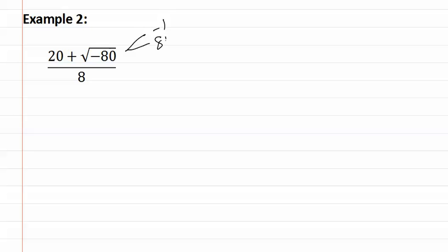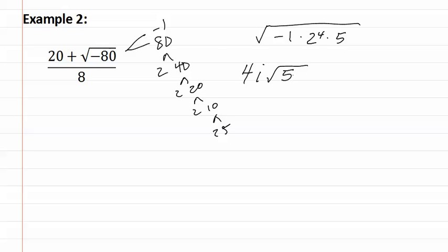First, we get a negative one and an eighty, and then we can break the eighty down further, to two and forty, two and twenty, two and ten, and two and five. Which gives us under the radical, a negative one, two to the fourth, and a five. This means that two squared or four comes out, as well as an i, and that the five stays in.